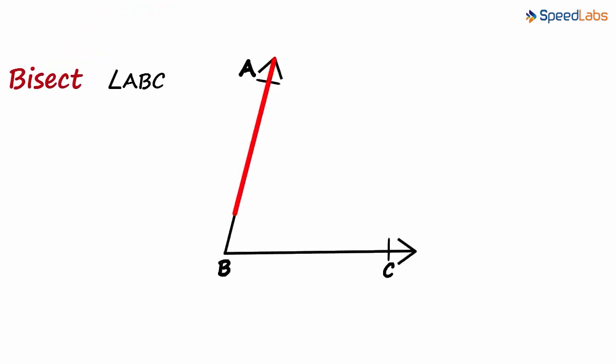How do we bisect angle ABC? This angle measures something and we just have to divide that measure into two equal parts. That's what bisecting means.